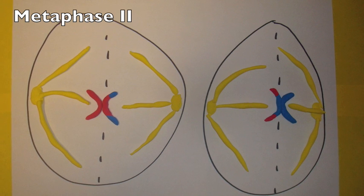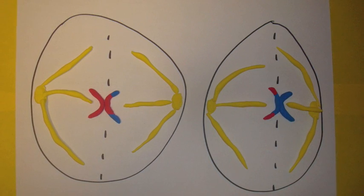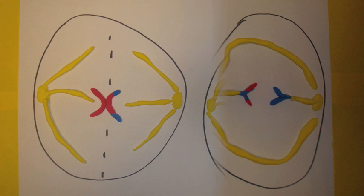Next, in metaphase II, the chromosomes with two chromatids line up at the equatorial line. The spindle is now fully formed.